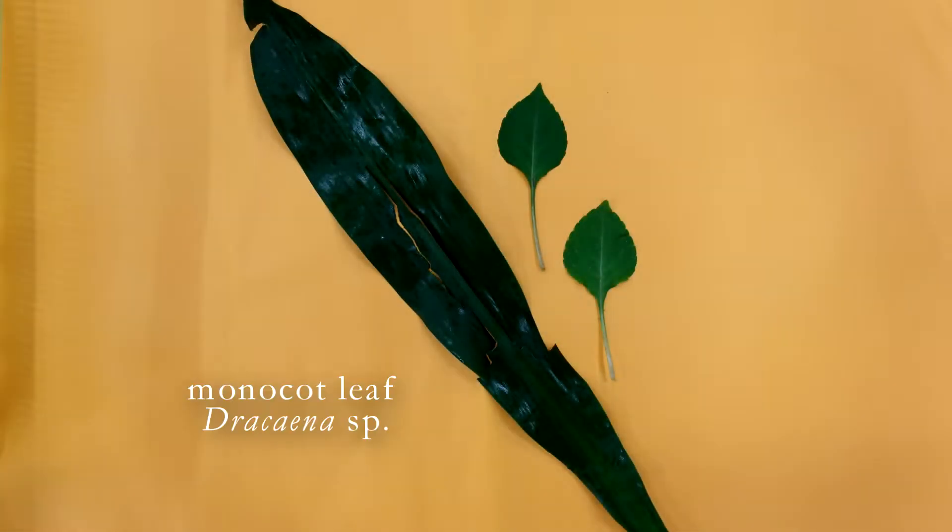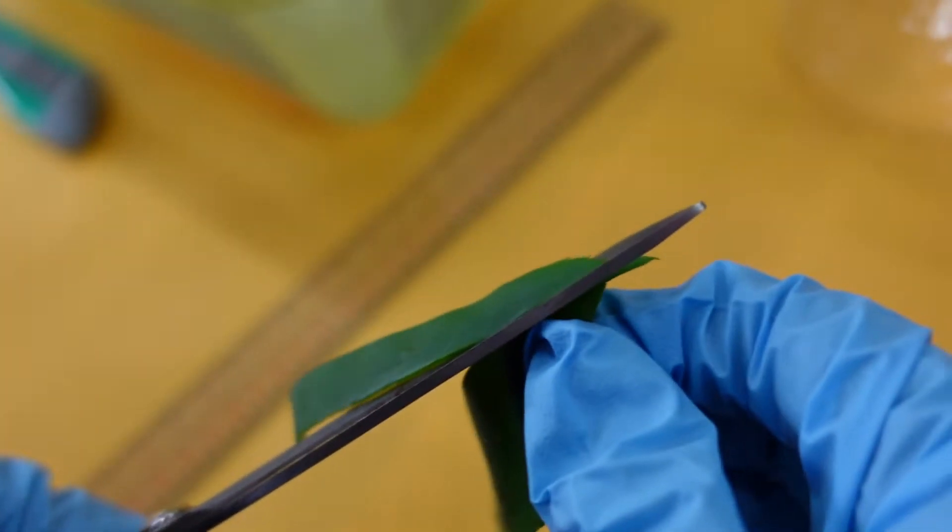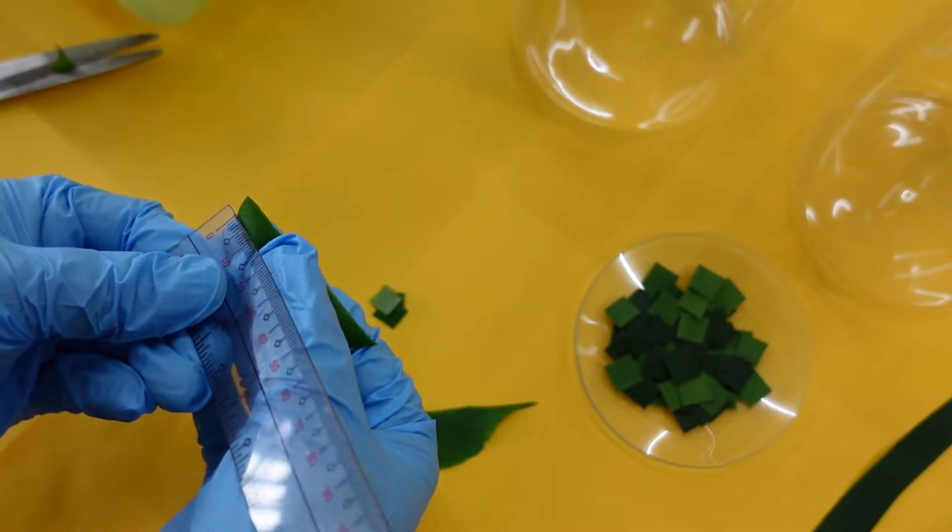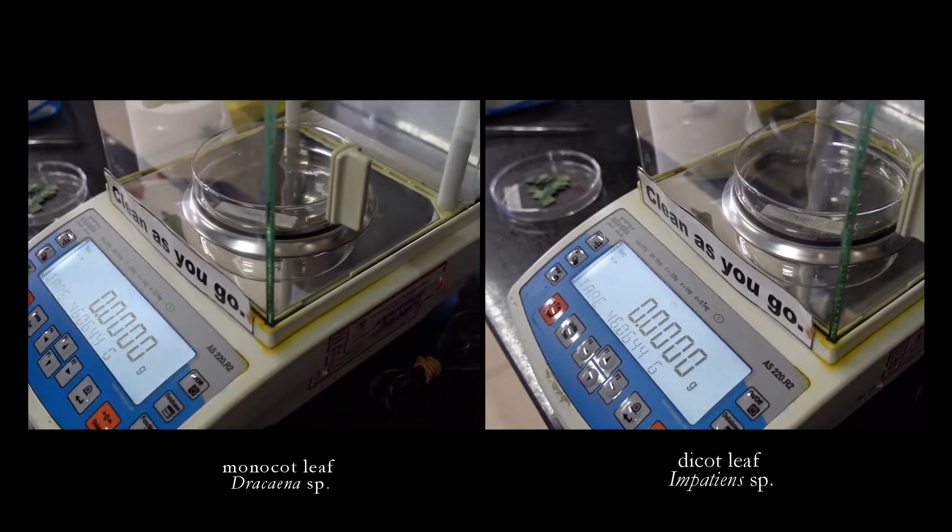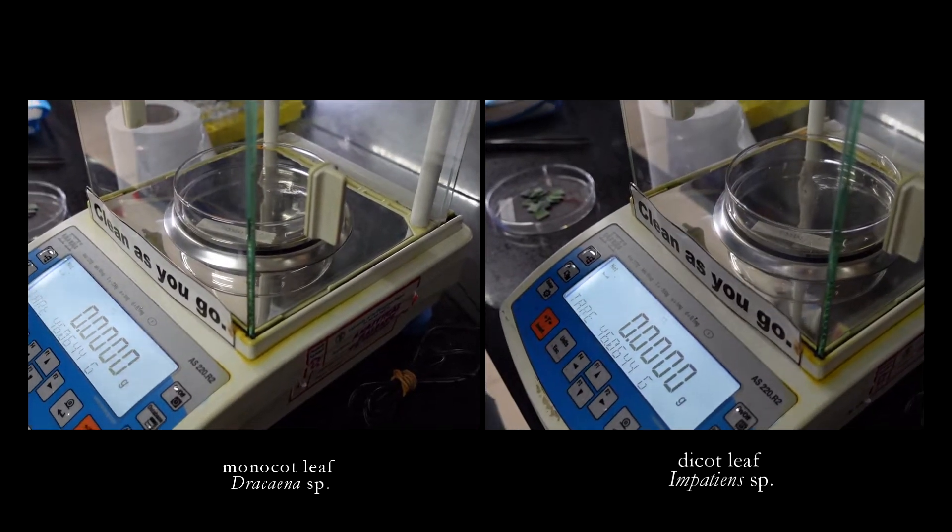Gather leaves from a monocot plant and a dicot plant. Cut these leaves into 1 cm² dimension and weigh 0.5 grams of leaf from each species.